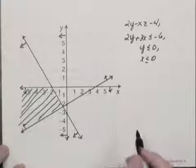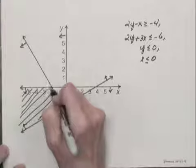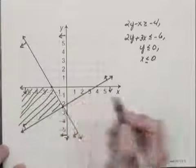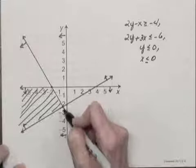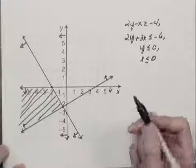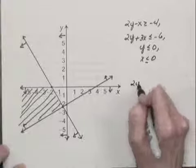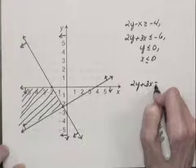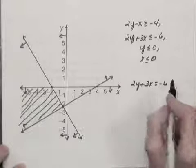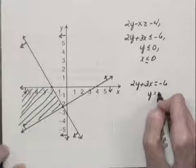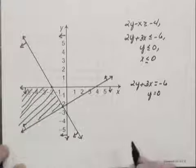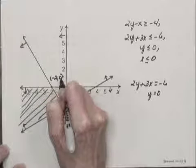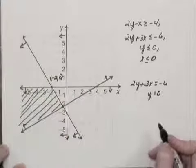To find the vertices, let's see, we have a vertex right here and we have a vertex right here. To find this vertex, we would solve the system of inequalities 2Y plus 3X. We would actually solve a system of equations. I misspoke. 2Y plus 3X equals negative 6 and Y equals 0. And that will give us the point negative 2, 0, which is this vertex. We always solve a system of related equations when we're finding coordinates of vertices.